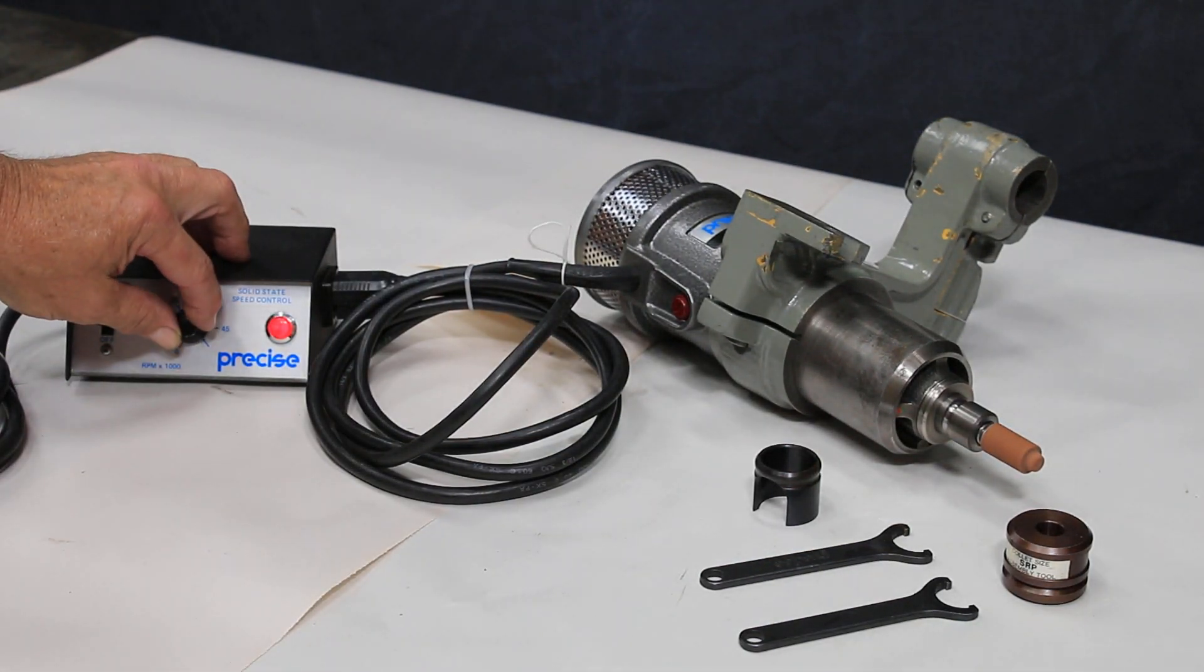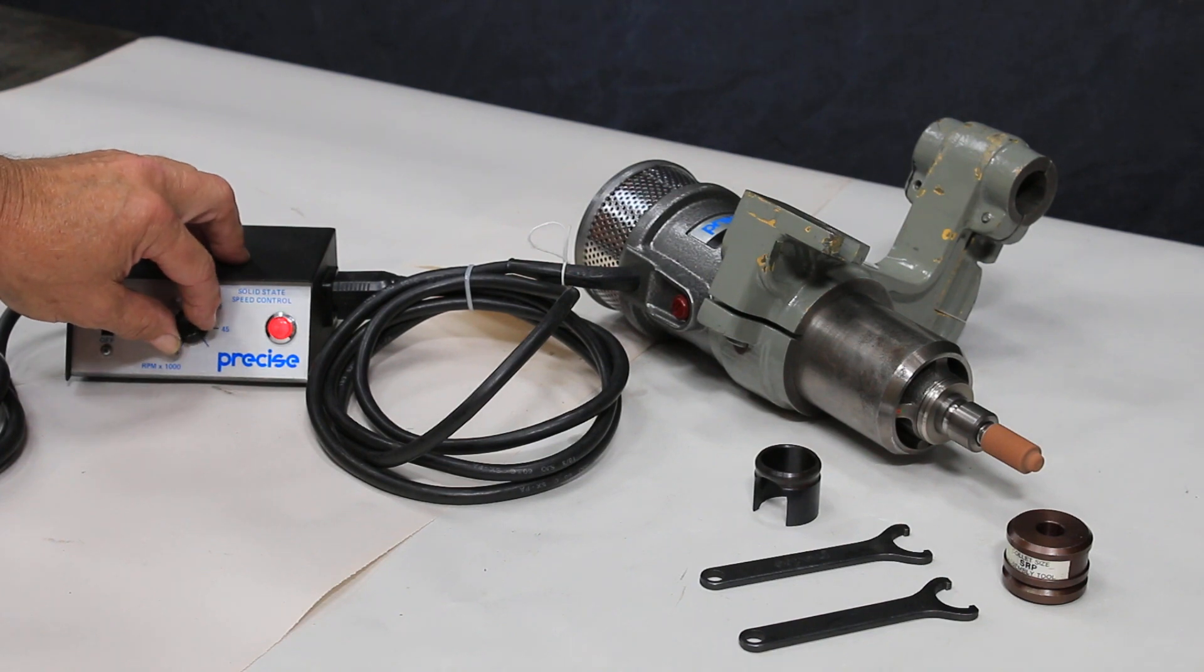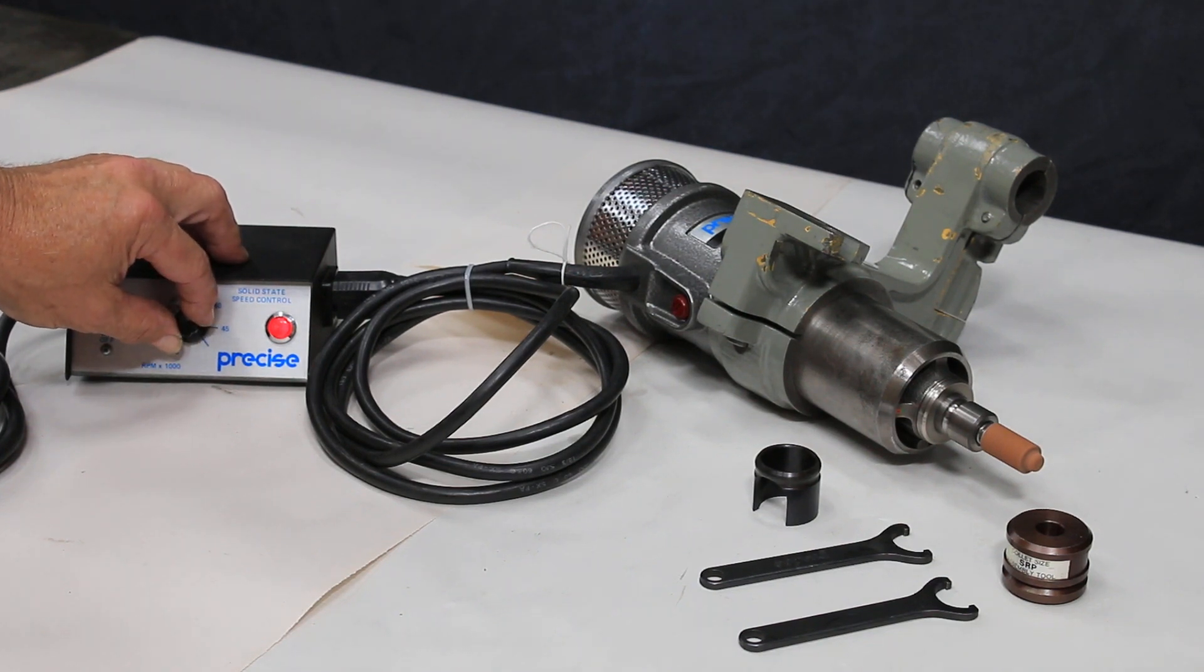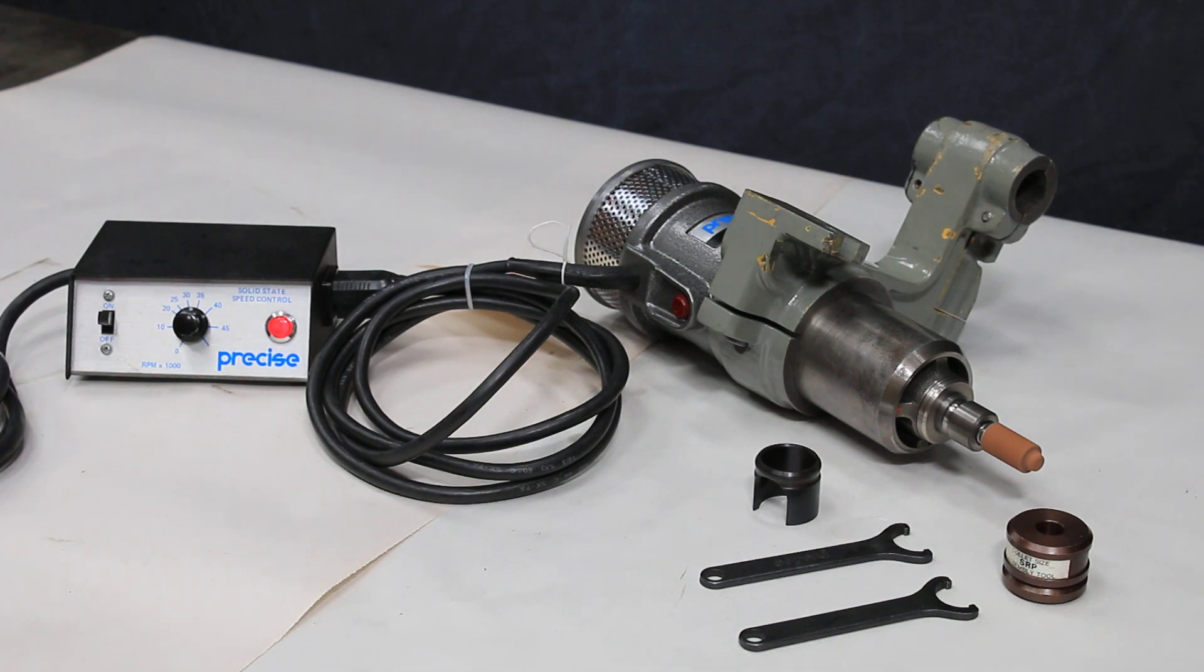So there you have it, this Precise spindle. This is a nice spindle, could be used on a lot of machines for a lot of different applications. But like I said, right now it comes with this bracket all ready to go on a Hipco grinder. So thank you very much.